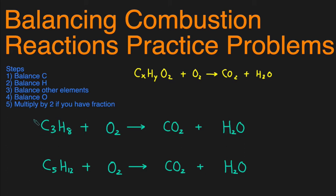We start by balancing the carbons, so let's take a look at how many carbons we have on the left and how many carbons we have on the right. We have three carbons on the left and one carbon on the right, so I'm going to put a three in front because three times one will give me three carbons. Now that the carbons are balanced, let's take a look at the number of hydrogens.